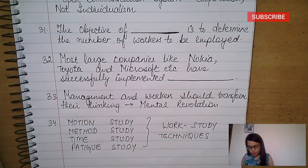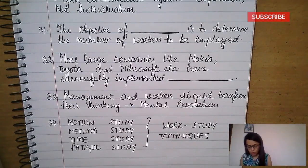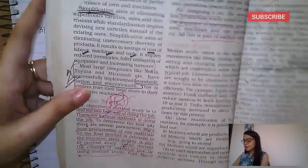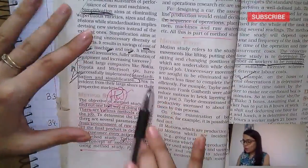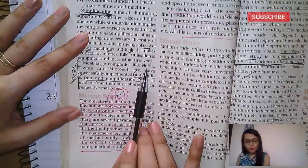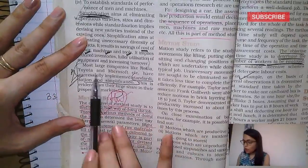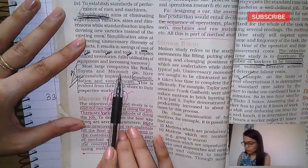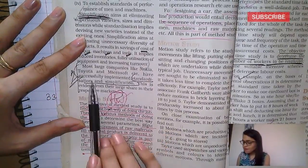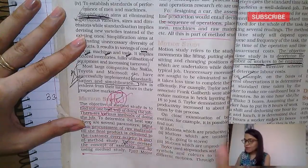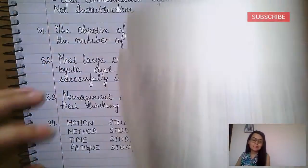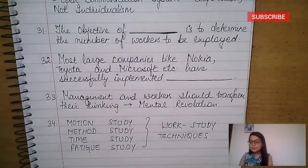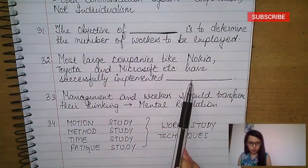Nokia (mobile company), Toyota (automobile), and Microsoft (software manufacturer) have successfully implemented standardization and simplification.